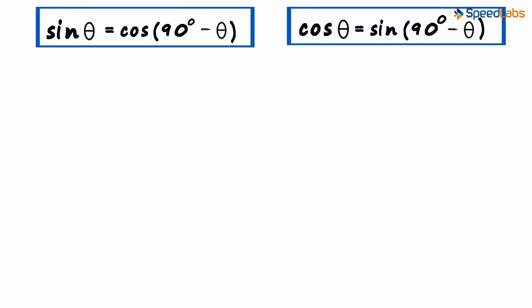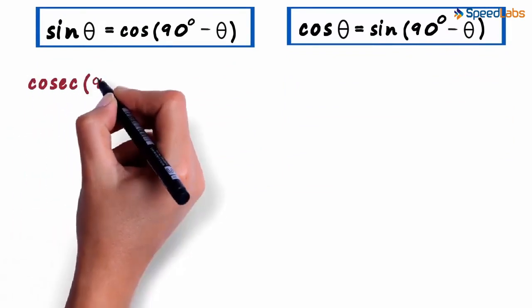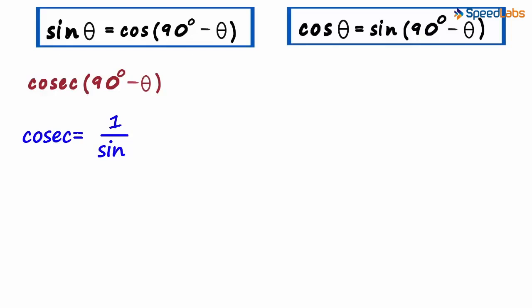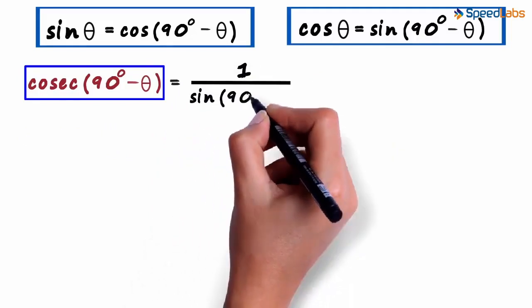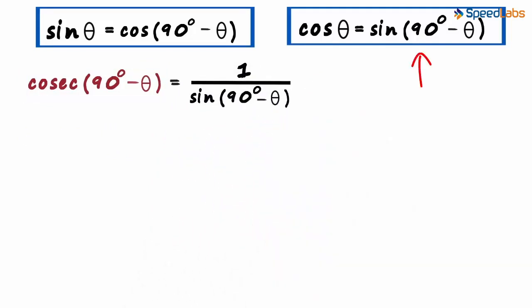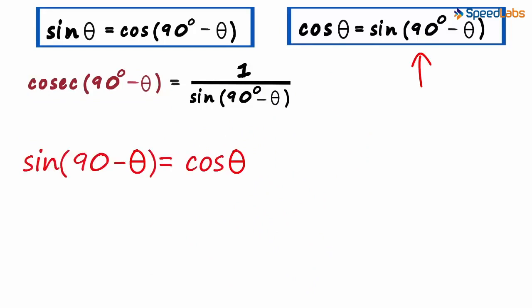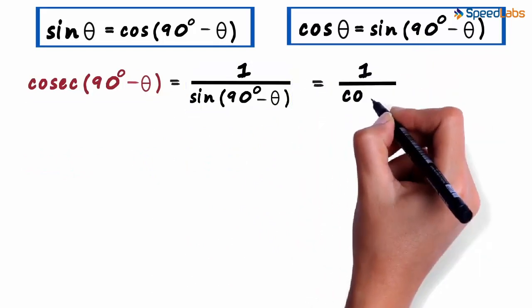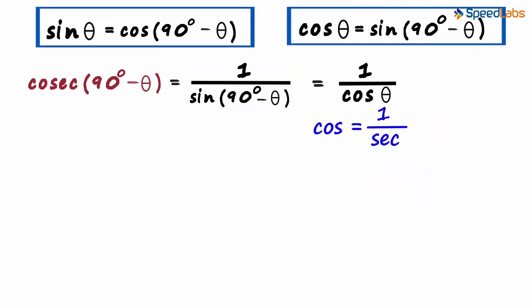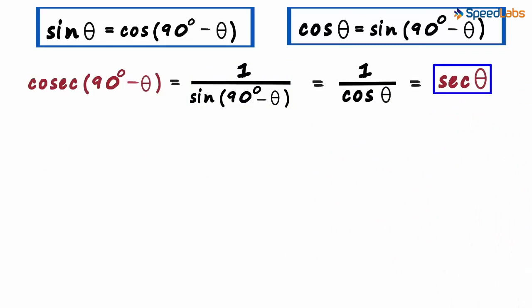First, let's try and figure out cosec(90° - θ). Cosec is the reciprocal of sine, so cosec(90° - θ) will equal 1 by sine(90° - θ). From this equation, we can say that sine(90° - θ) equals cos θ. This ratio can therefore be written as 1 by cos θ. The reciprocal of cos θ is sec θ. This tells us that the secant of an angle will equal the cosecant of its complementary angle.